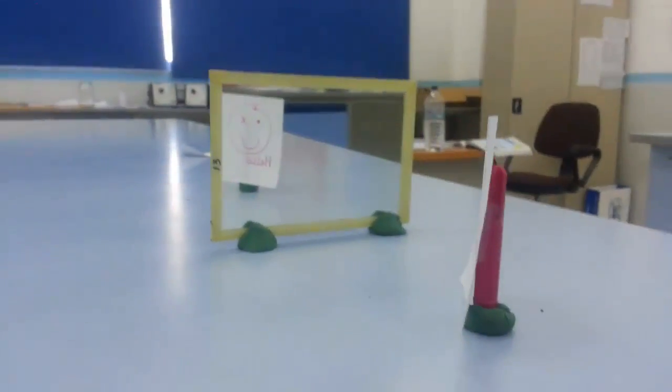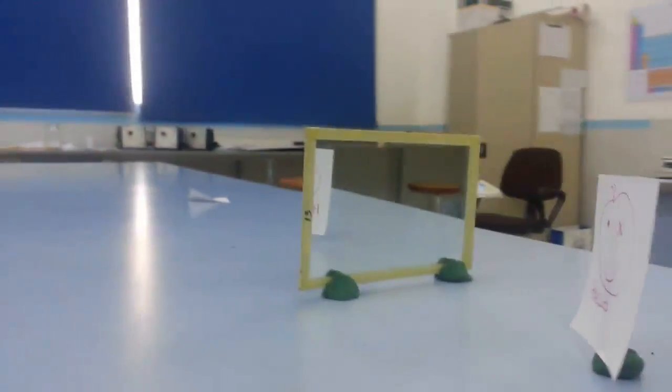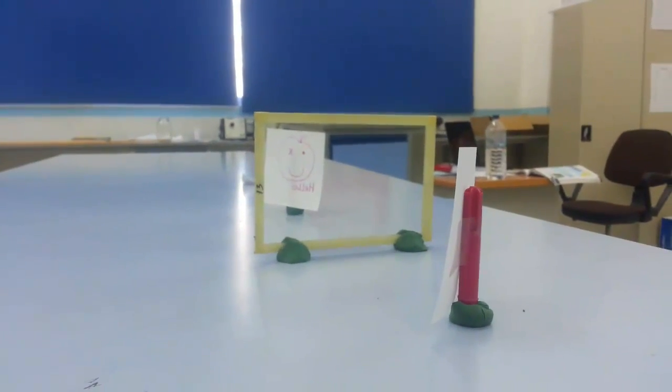Other interesting things happen with mirrors. One of them is that if the object is, say, five centimeters from the mirror, the image appears to be five centimeters into the mirror or five centimeters deep into the mirror.